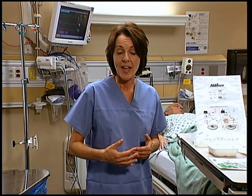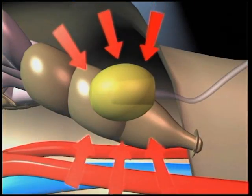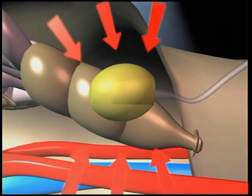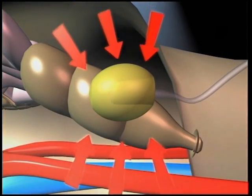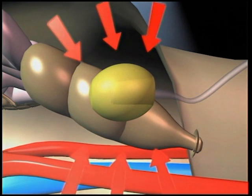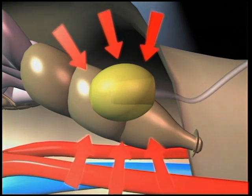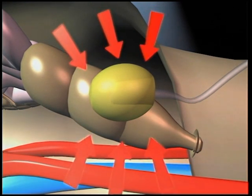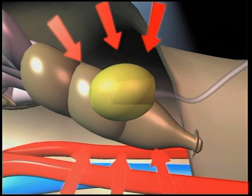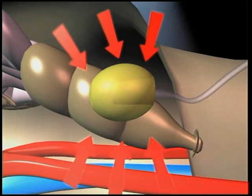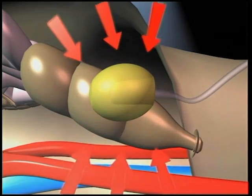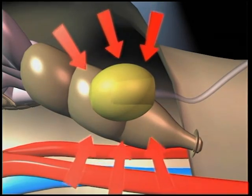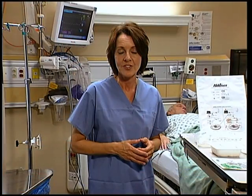Because the bladder is contained within the abdominal cavity, pressure within the bladder directly correlates with pressure in the abdomen. For this reason, bladder pressure measurement through the Foley catheter is now considered the gold standard method for measuring and trending intra-abdominal pressure.